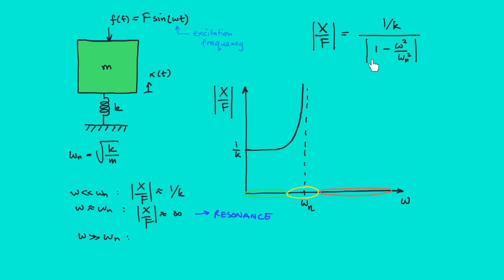And thus we end up with ω²/ωₙ² only because we take the absolute value. So X/F is 1/k over (ω²/ωₙ²), and because ωₙ² is k/m, we have 1/k over (ω²m/k).